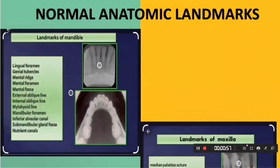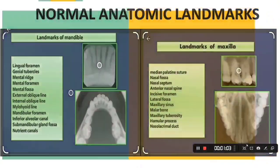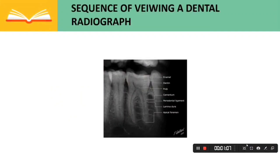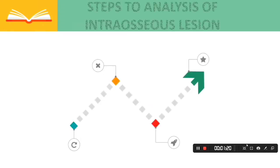Here are some normal anatomic landmarks seen on radiographs of the maxilla and mandible. Sequence of viewing a dental radiograph: first, assess the periphery and corners of the image; second, examine the bone pattern of the maxilla and mandible; third, examine the teeth.